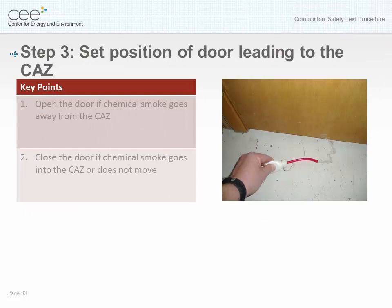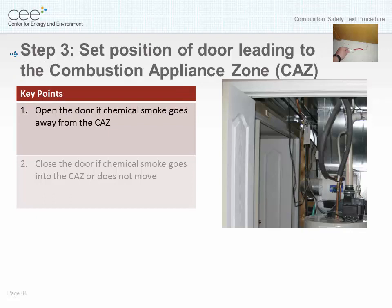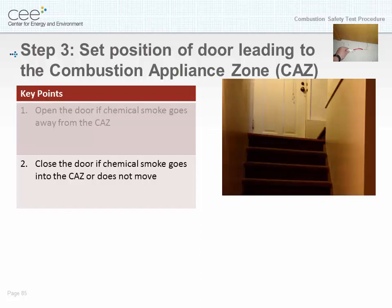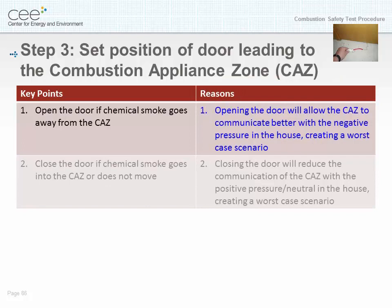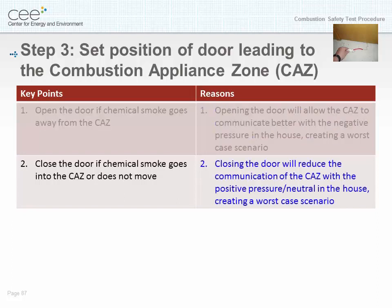Step three: set position of door leading to the combustion appliance zone (CAS). Open the door if chemical smoke goes away from the CAS. Close the door if chemical smoke goes into the CAS or does not move. Opening the door will allow the CAS to communicate better with the negative pressure in the house, creating a worst case scenario. Closing the door will reduce the communication of the CAS with the positive or neutral pressure in the house, creating a worst case scenario.